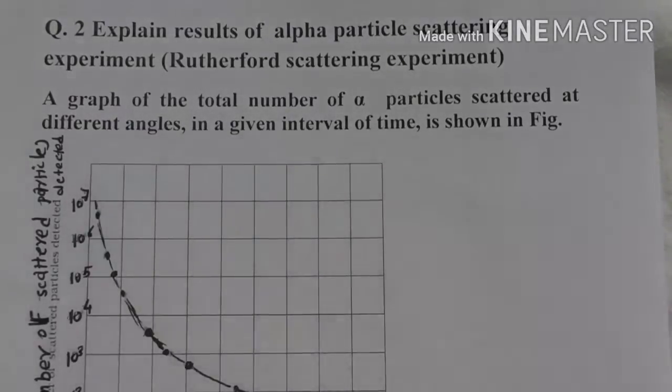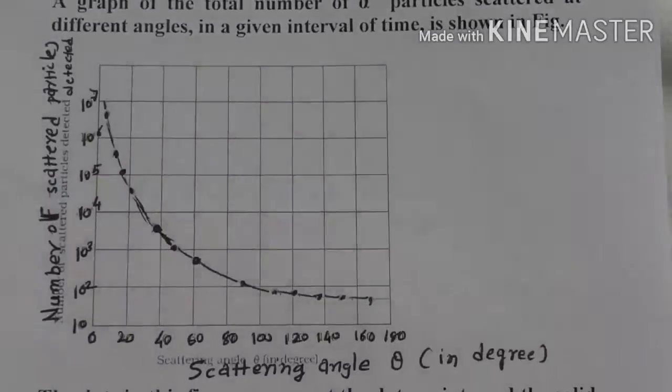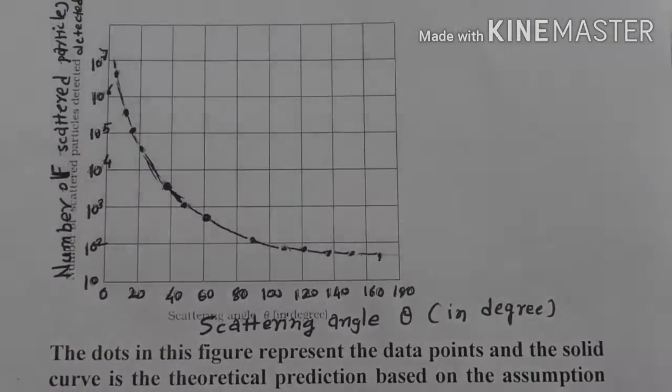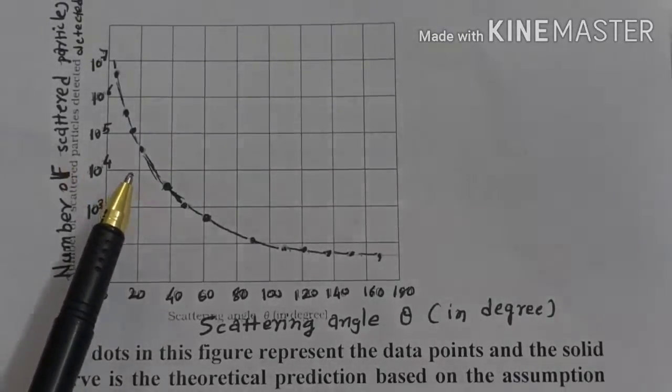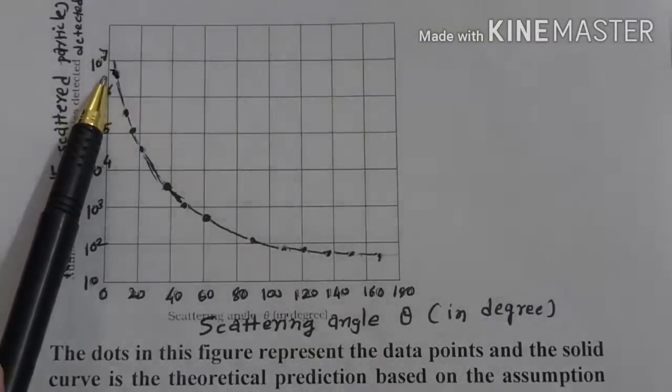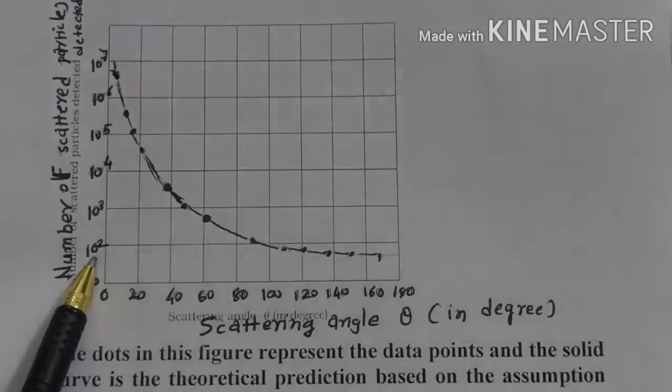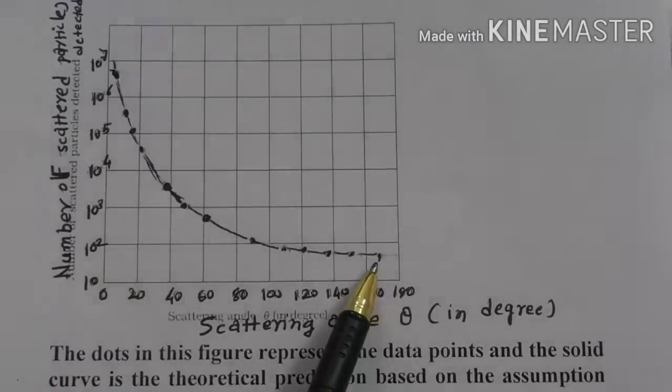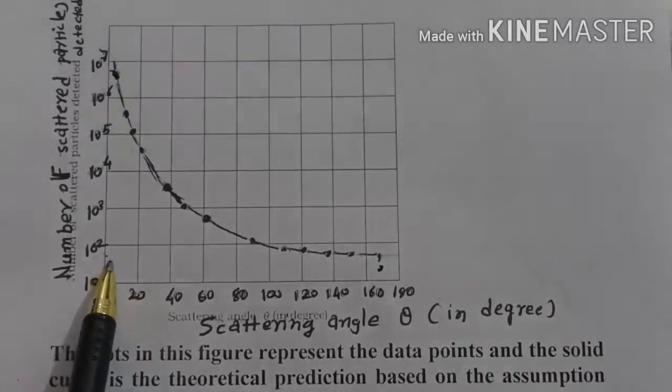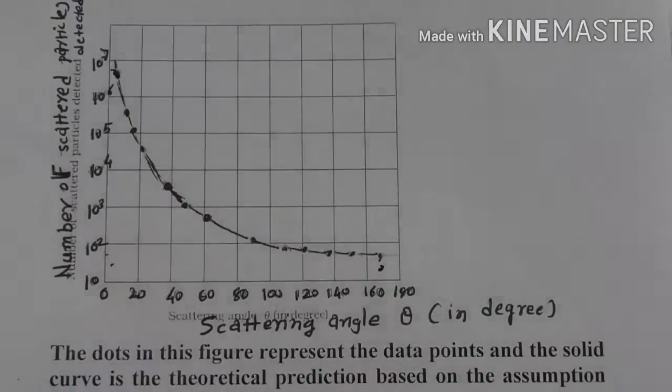Whatever the experiment performed earlier, we want to discuss the result of that experiment, alpha particle scattering experiment. So what is the result? Number of alpha particles versus scattering angle. So this is the graph. Here in this graph, the solid curve represents theoretical prediction.